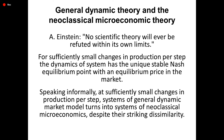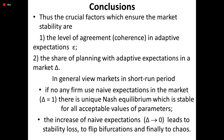General Dynamic Theory and the neoclassical microeconomic theory. Albert Einstein once said: no scientific theory will ever be refuted within its own limits. For sufficiently small changes in production per step, the dynamics of the system has the unique stable Nash equilibrium point with an equilibrium price in the market. Speaking informally, at sufficiently small changes in production per step, the systems of the General Dynamic Market Model turn into systems of neoclassical microeconomics, despite their striking dissimilarity.